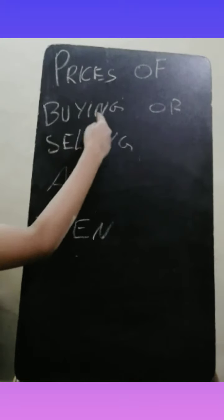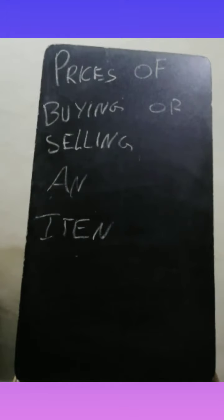Our next topic is prices of buying or selling an item. The buying price of an item is known as the cost price, written as CP. The selling price, written as SP, is the price at which you sell it.